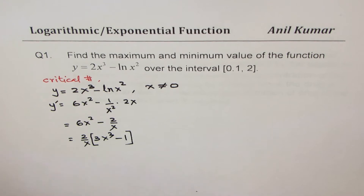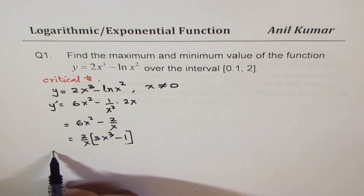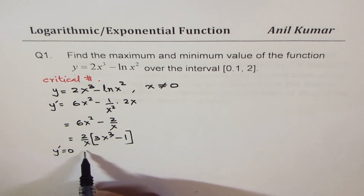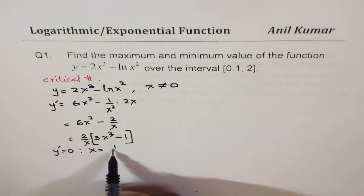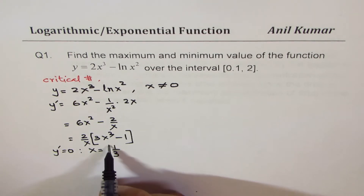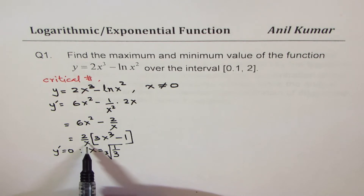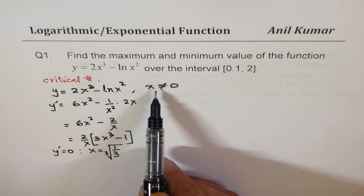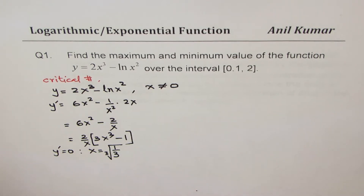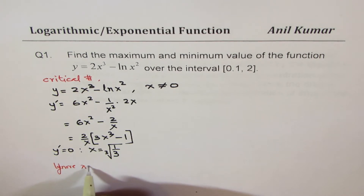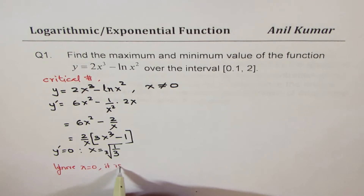So the derivative becomes (2/x)·(3x³ − 1). For a critical number, we set this equal to zero. This gives x = cube root of 1/3. Note that x = 0 would also give a critical value from the denominator, but x = 0 is not in our domain, so we ignore it.